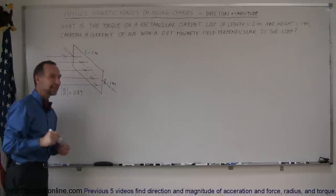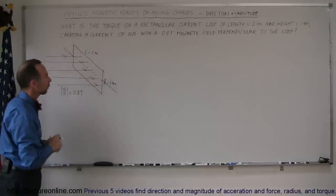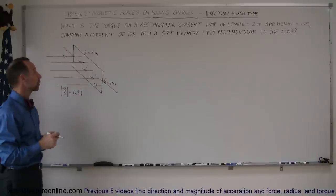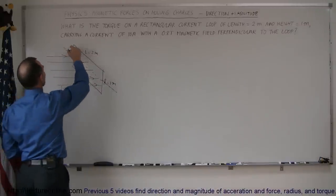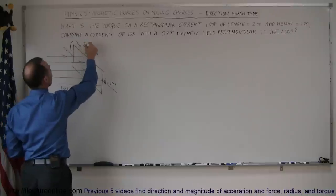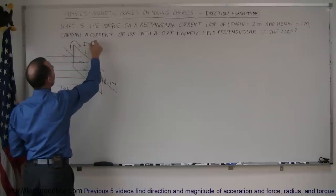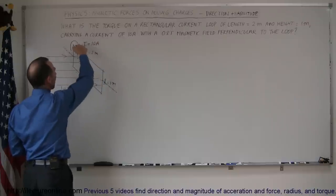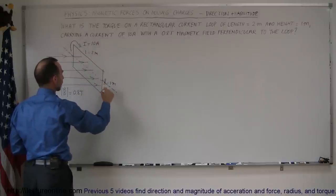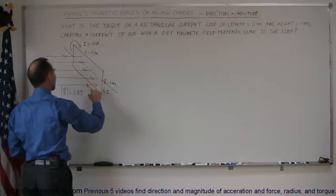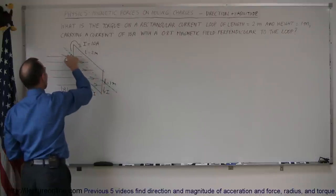The problem didn't specify the direction of current, but let's say it's clockwise around the loop, so I is equal to 10 amps. That means at the top the current goes this way, on the side the current goes this way, at the bottom the current goes in this direction, and on the other side the current goes up.